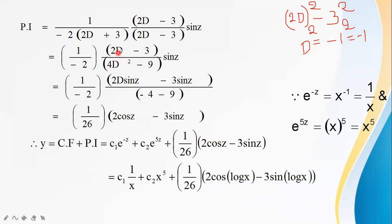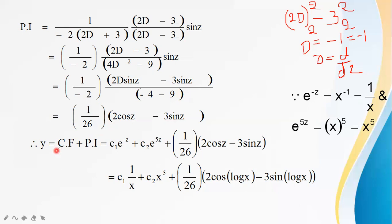Now applying: 2D(sin z) − 3 sin z = 2 cos z − 3 sin z, since D(sin z) = cos z. The denominator becomes (−13)(−2) = 26. So PI = (1/26)(2 cos z − 3 sin z). Therefore the complete solution is y = c₁e^(−z) + c₂e^(5z) + (1/26)(2 cos z − 3 sin z).